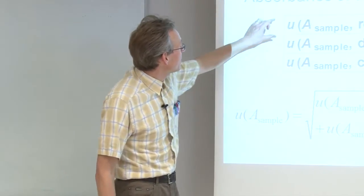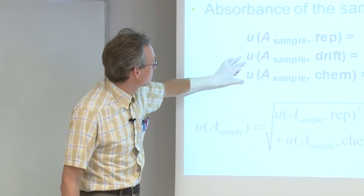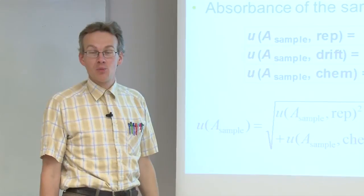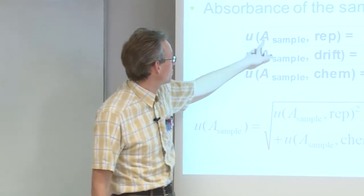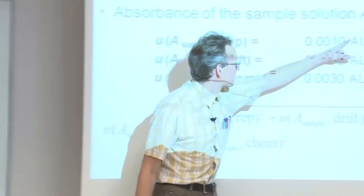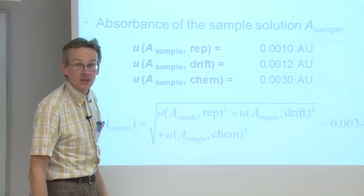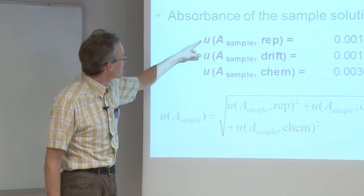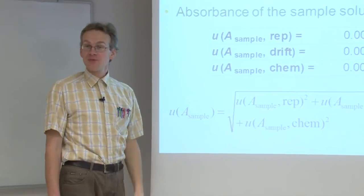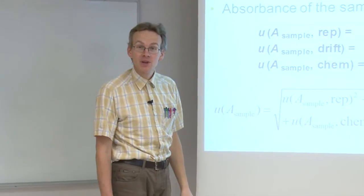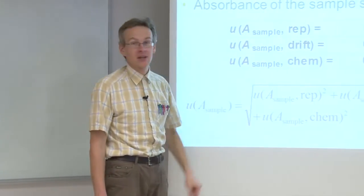Since all these uncertainty components are related to the same quantity, expressed in the units of that same quantity, and also expressed as standard uncertainties, we can simply combine them using the squared summing rule.